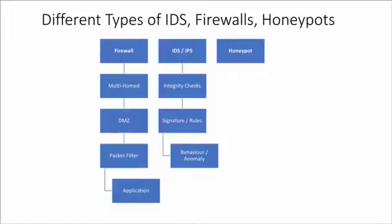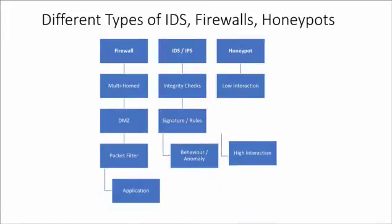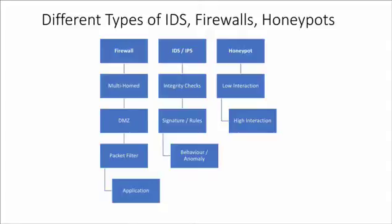In honeypots, there are two main types. Low interaction honeypots are ones you can't really interact with — they sit on the internet and absorb and consume malware, categorize it, and store it for later analysis. High interaction honeypots are used to actually see how people are hacking into systems — putting up a fake SSH or HTTP server, watching the different attacks, and then building rules in IDSs and IPSs to block those attacks. Generally, these three systems all go hand in hand, working together in unison as defense in depth to protect the network.